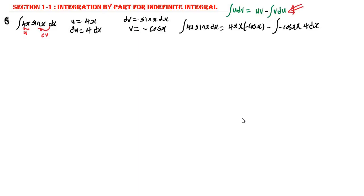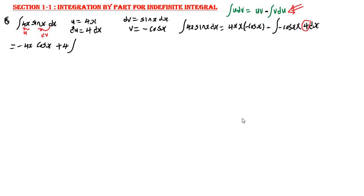This gives us negative 4s·cosine s. Then, notice we have negative multiplied by negative, so that becomes positive. We are also having a constant 4 inside the integral. Since we have a constant inside the integral, we need to take this constant outside. So this becomes plus 4 multiplied by the integral of cosine s ds.